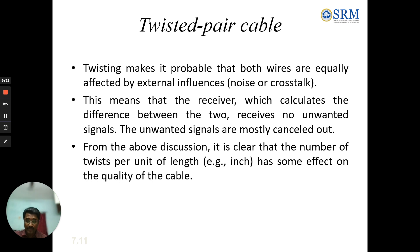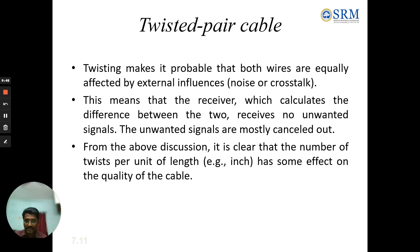When using twisted pair cable, the number of twists per unit length — for example, per inch — has an effect on the quality of the cable. The twisted pair cable consists of an outer insulator (PVC) and solid copper conductors.